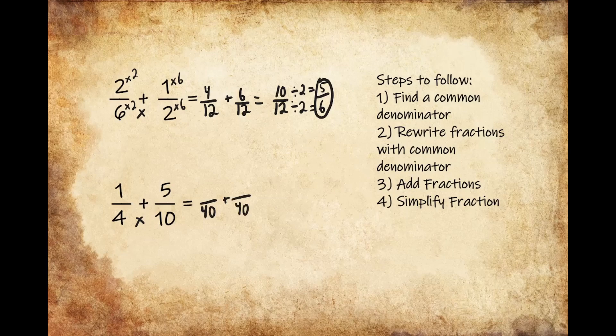Now I need to rewrite the numerators. I had to multiply 4 times 10 in order to get 40, so I have to multiply 1 times 10 in order to get the value of the numerator. That gives me 10/40.